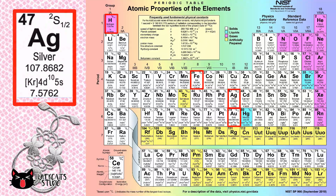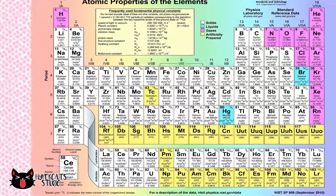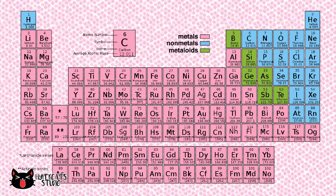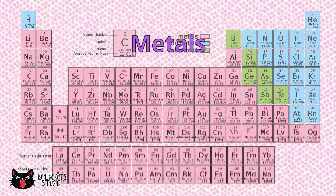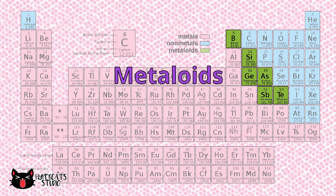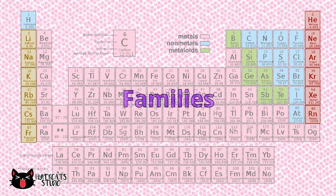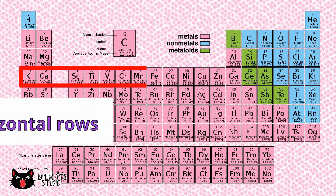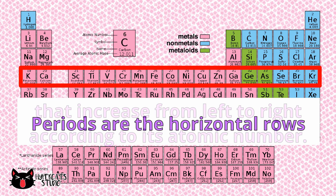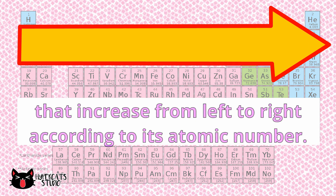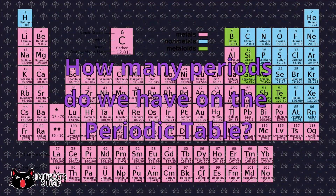Iron, hydrogen, gold, and silver are some common elements. There are 118 known elements today that we can see on a periodic table. Elements are classified as either metals, metalloids, or non-metals, and are arranged according to periods and families. Periods are the horizontal rows that increase from left to right according to atomic numbers.